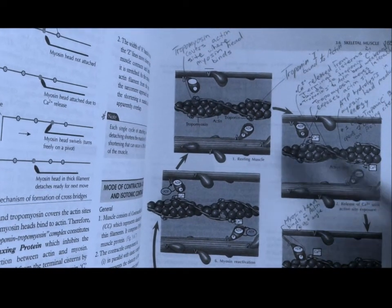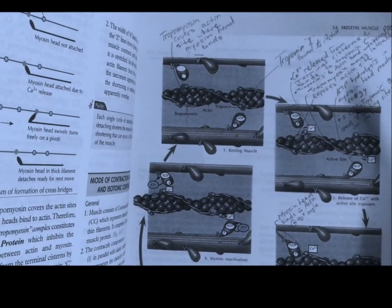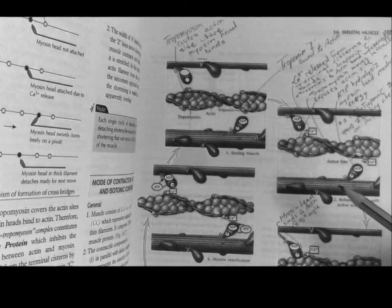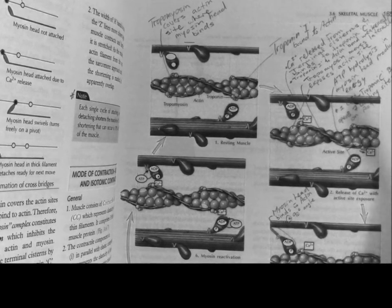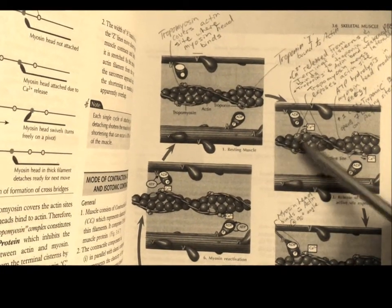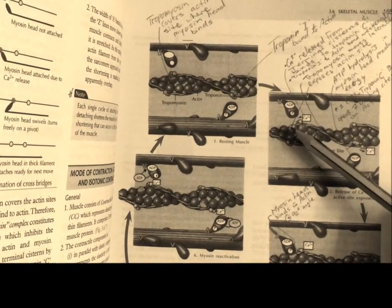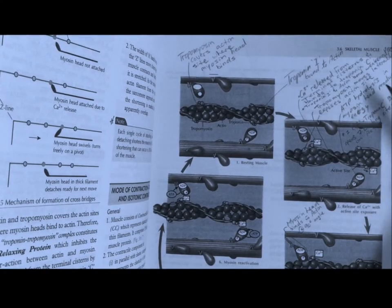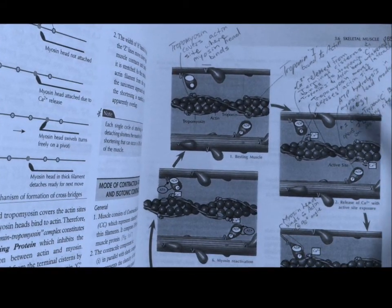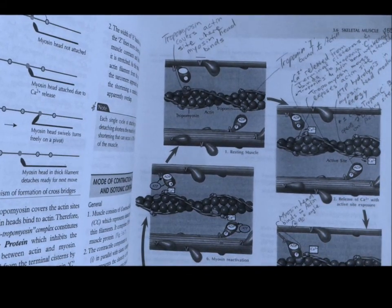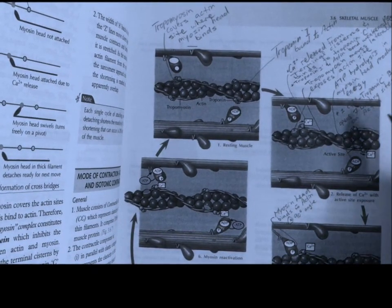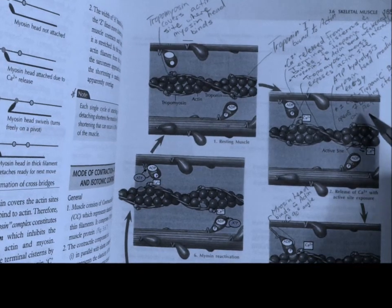In the next step, calcium is released from the terminal cisterns and it binds to troponin C. This causes weakening of the bond between troponin I and actin. Thus, tropomyosin moves laterally and exposes the actin site as you can see right here. Also, ATP hydrolysis by way of ATPase enzyme activity occurs in myosin and this produces energy. Note that for each calcium-troponin C bond, there are seven binding sites open on actin.